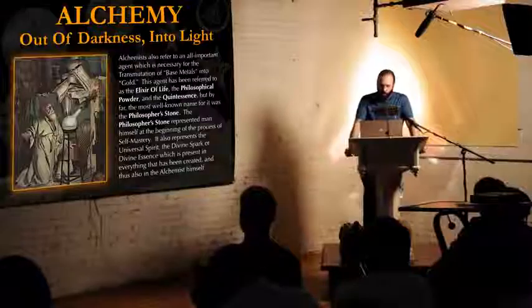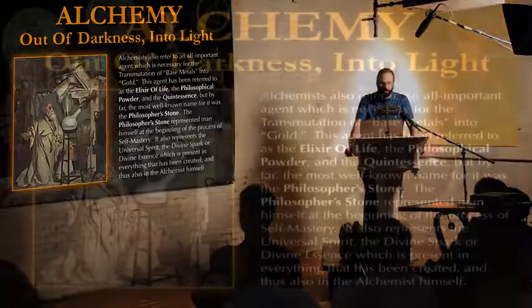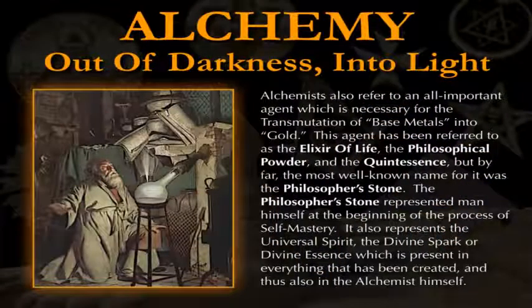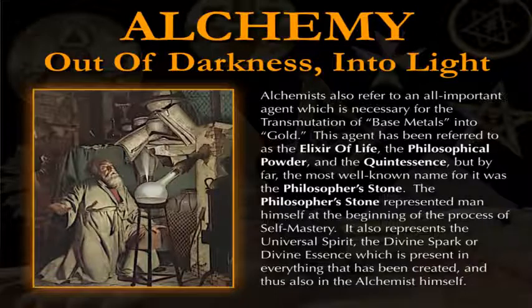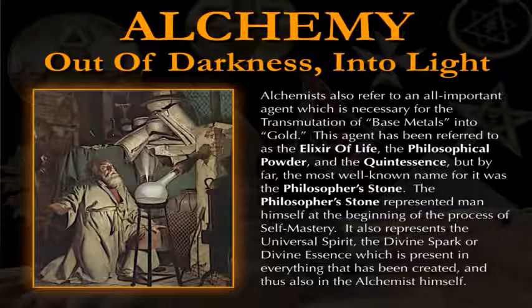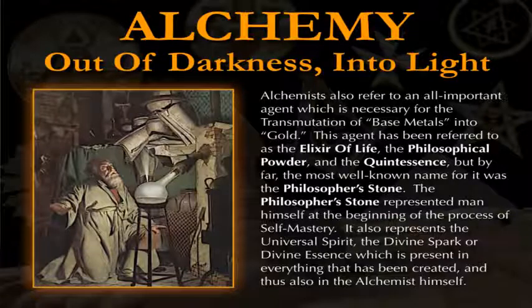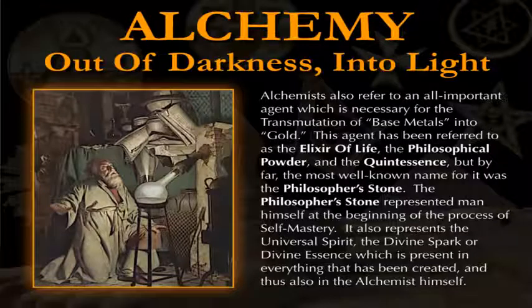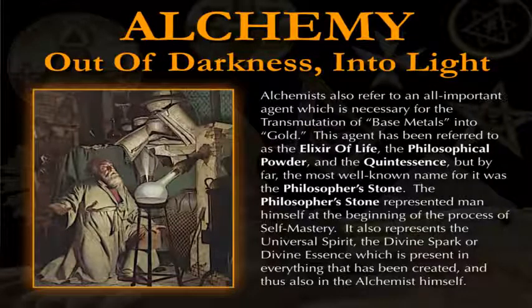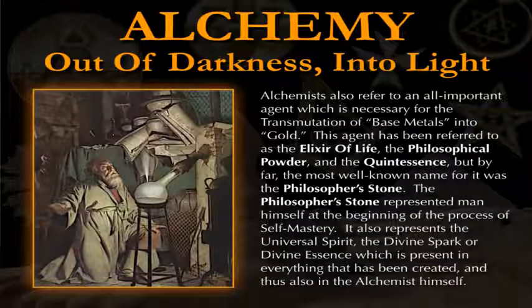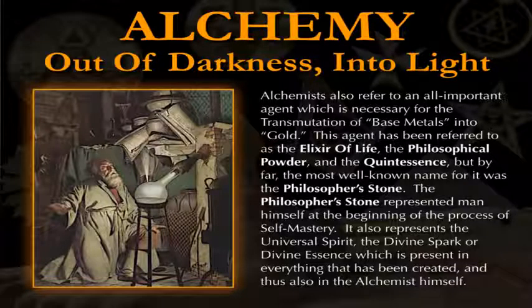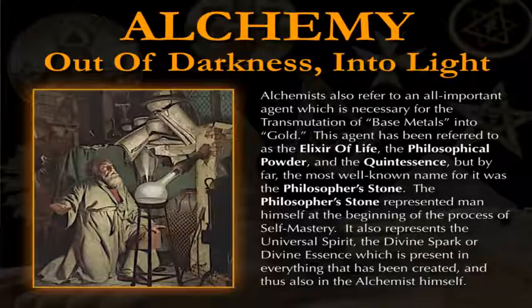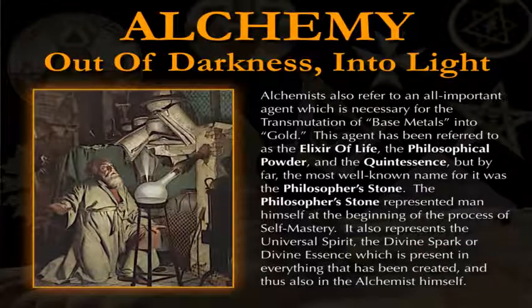Alchemists also referred to an all-important agent which is necessary for the transmutation of base metals into gold, or in other words, base modes of consciousness into higher forms of consciousness. This agent has been referred to as the elixir of life, the philosophical powder, and the quintessence, but by far the most well-known name for this agent of transformation was the philosopher's stone. The philosopher's stone represented man himself at the beginning of the process of self-mastery. It also represented the universal spark, the divine spark or divine essence, which is present in everything that has been created, and thus also in the alchemist himself.